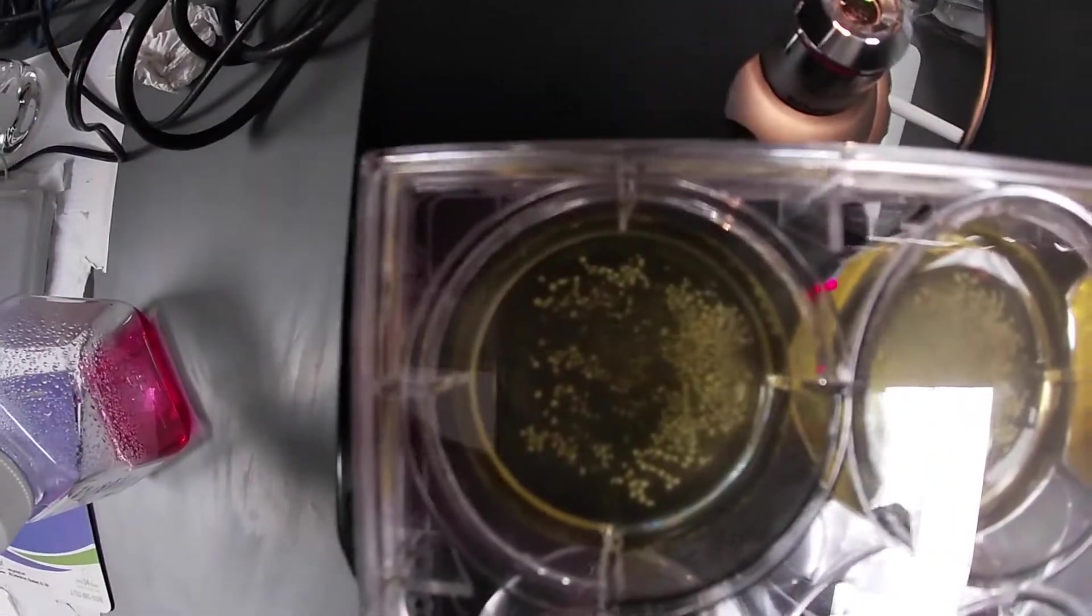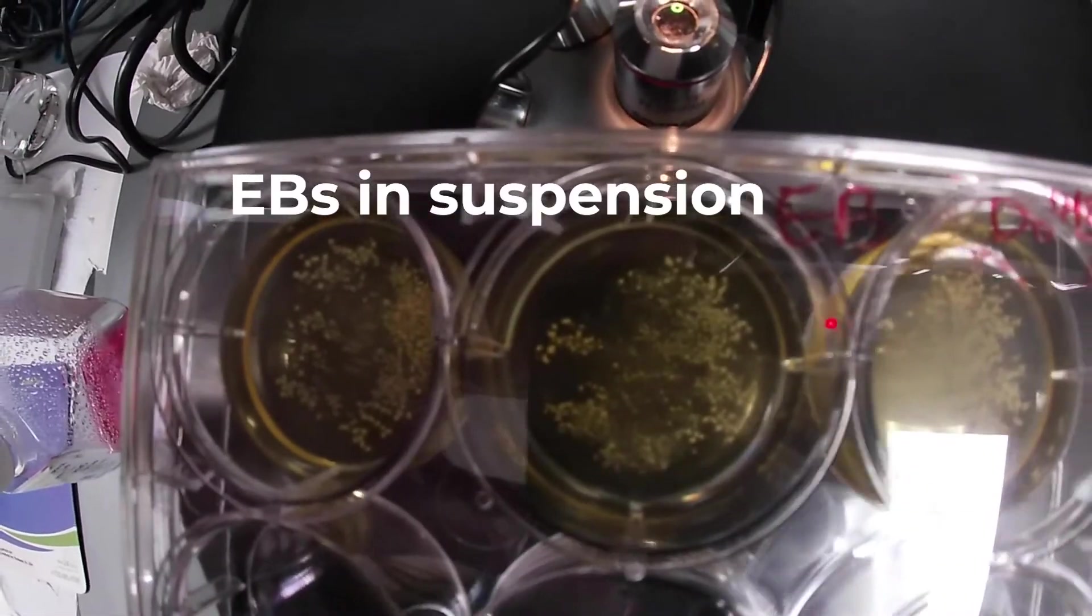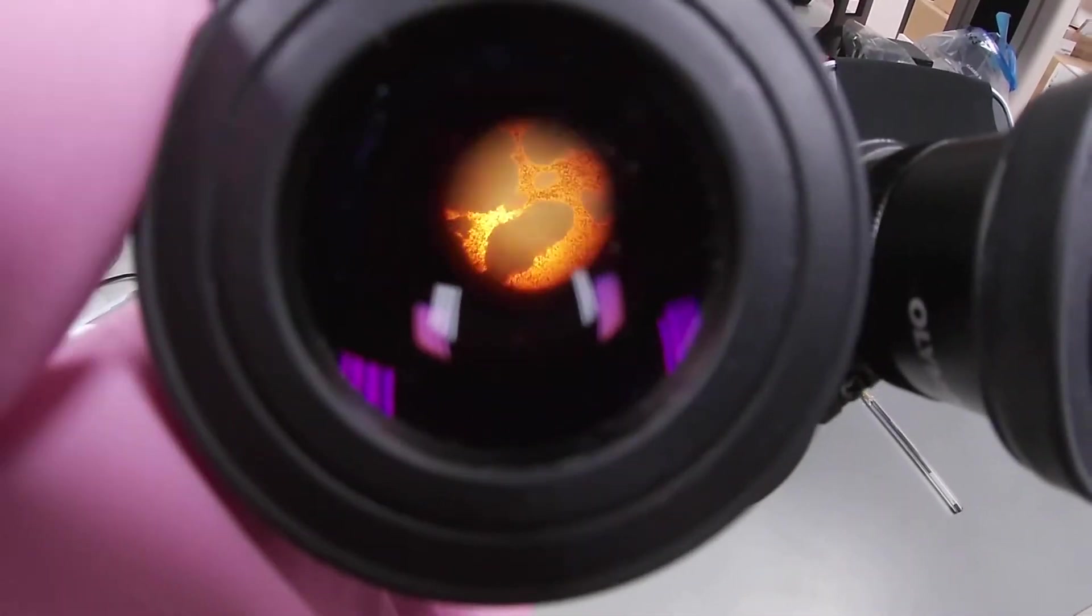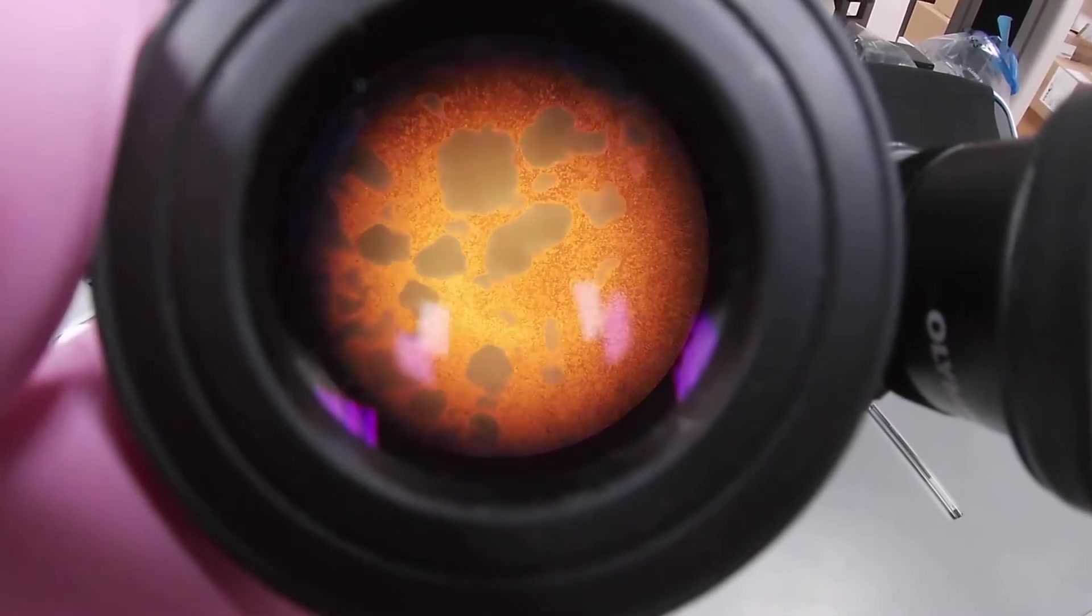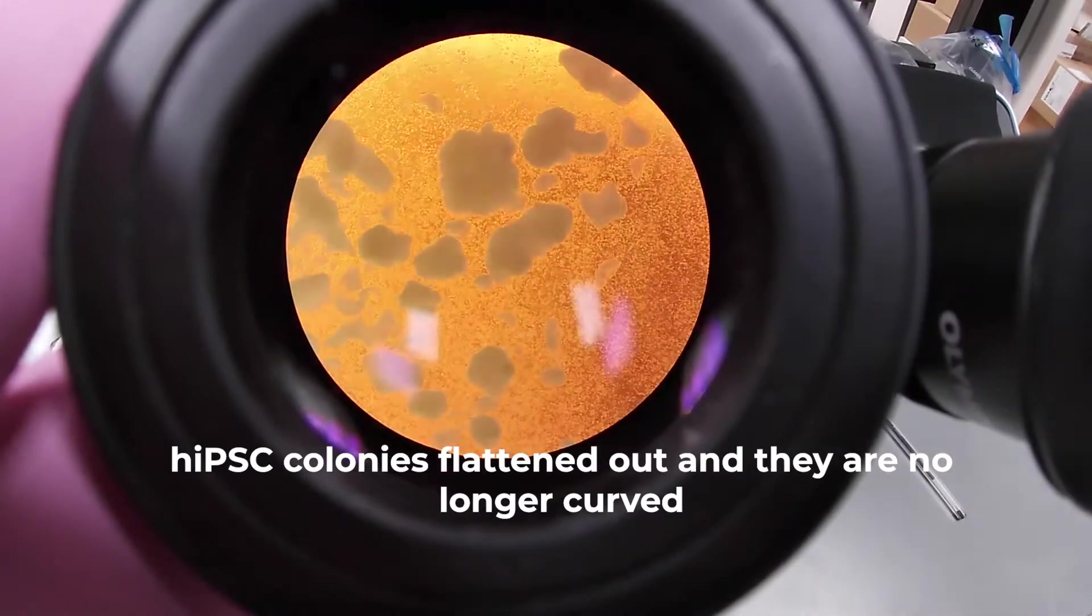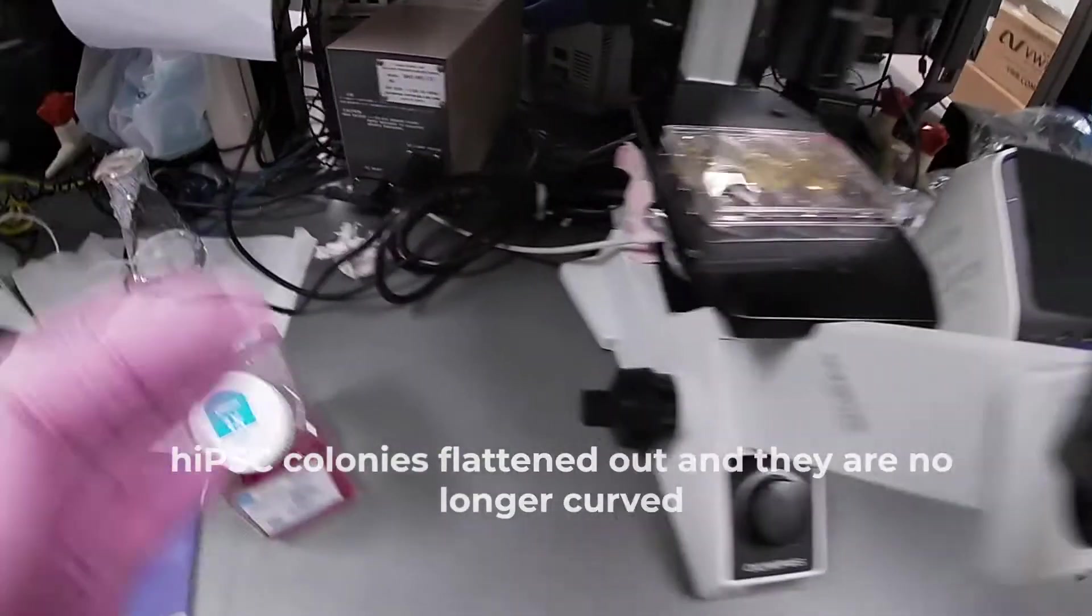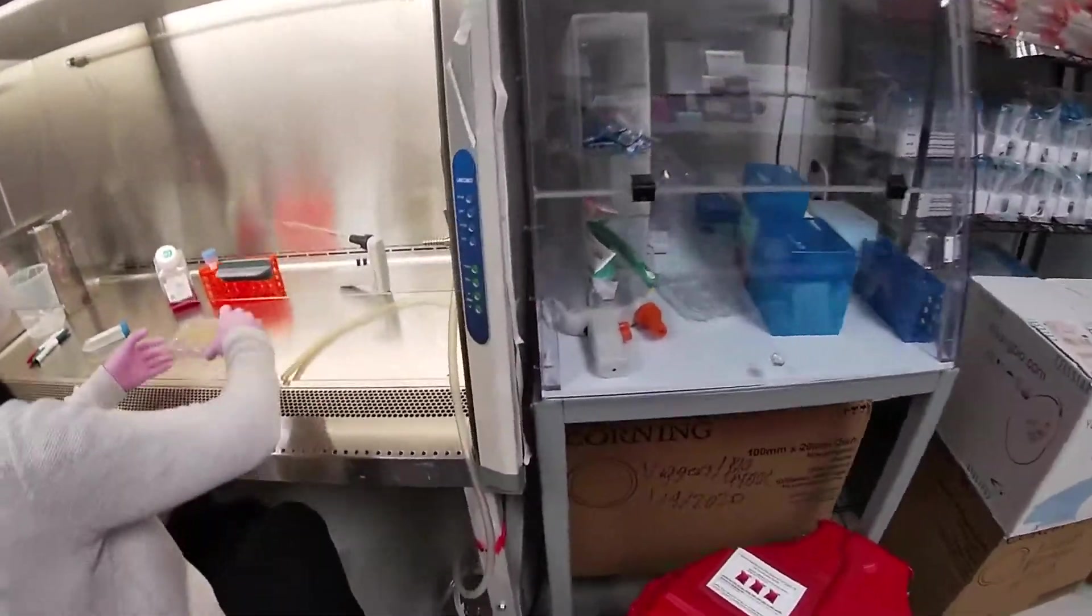Go ahead and take out your ultra-low attachment plate from the CO2 incubator. All of these are your iPSC colonies in suspension. If you remember from the previous video, the colonies were actually curved and now they have completely flattened. This is day two of the culture.